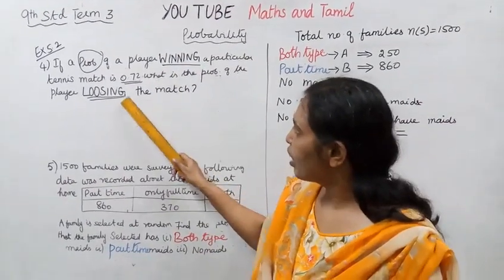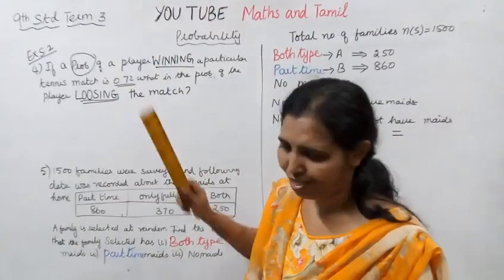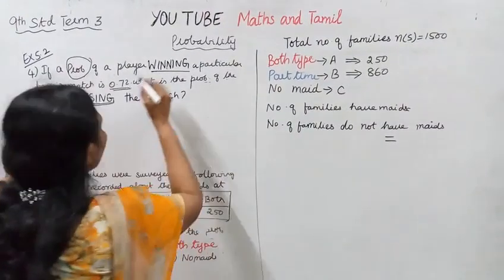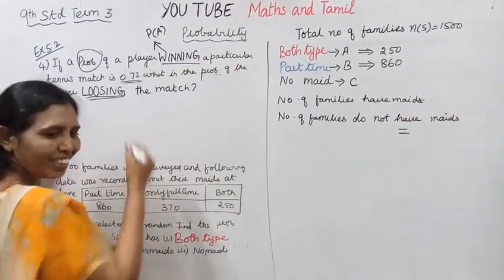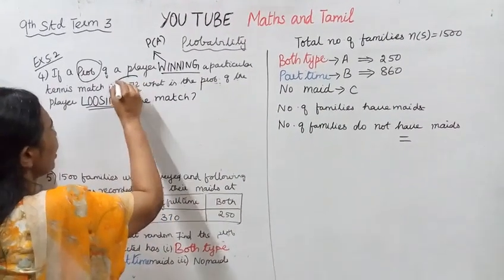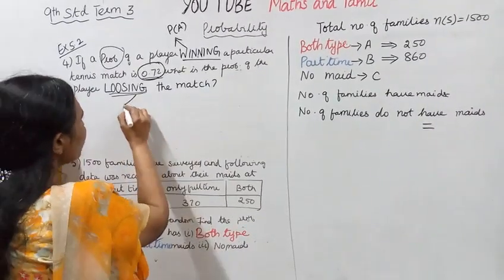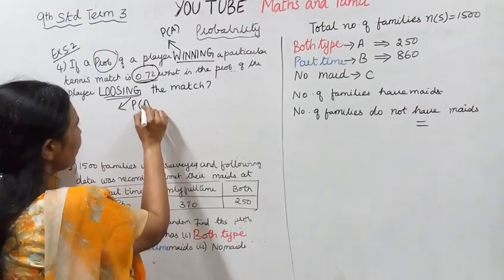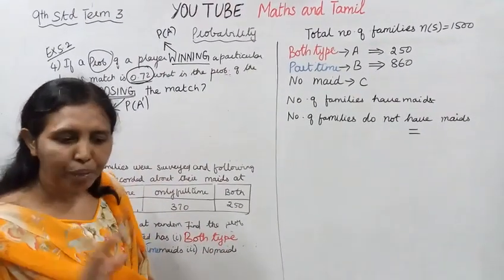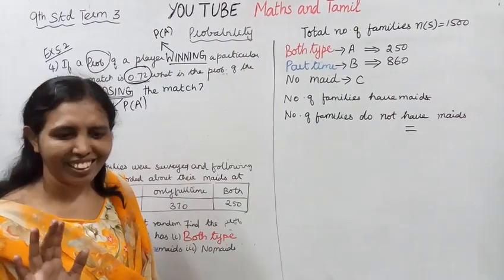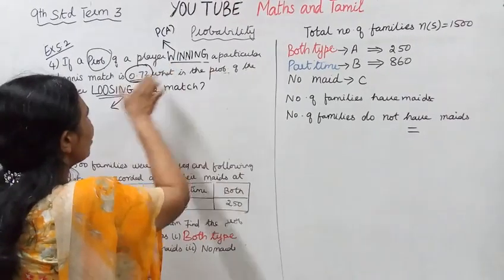The probability of winning or losing — probability of winning is given. The probability of a player winning, P of A, is 0.7. The formula is P of A equal to n of A by n of S. Using this formula: player winning leads to losing.